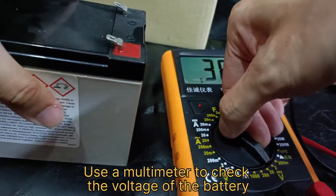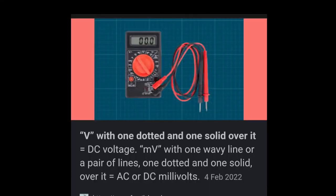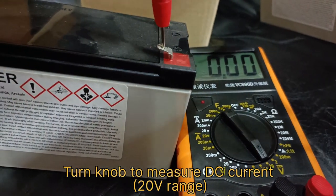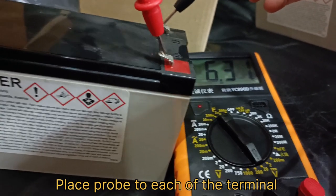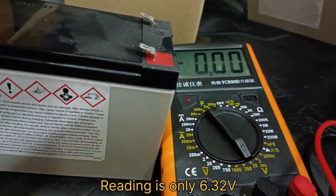We will use a multimeter to check the voltage of the old battery and see whether it is 12 volts. DC voltage on the multimeter is indicated by a dotted line and one solid line over it. Turn the knob to measure the DC voltage and adjust it to 20-volt range. Place each probe at each of the terminals. You can see the reading is only showing 6.32 volts.